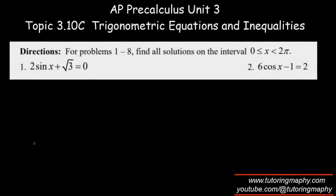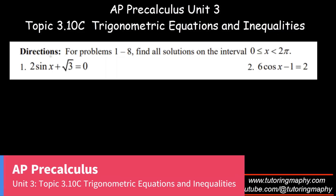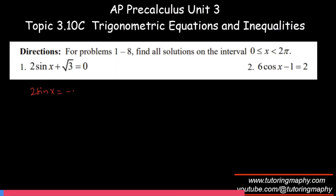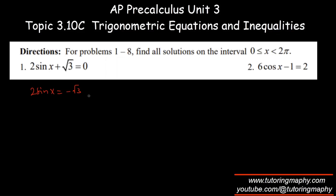This is the third video on 3.10 trig equations and inequalities, starting with equations. We need to solve for x in the interval 0 to 2π. We isolate sine x: 2sin(x) equals negative root 3 on the other side, so dividing both sides by 2 gives sin(x) = -√3/2.